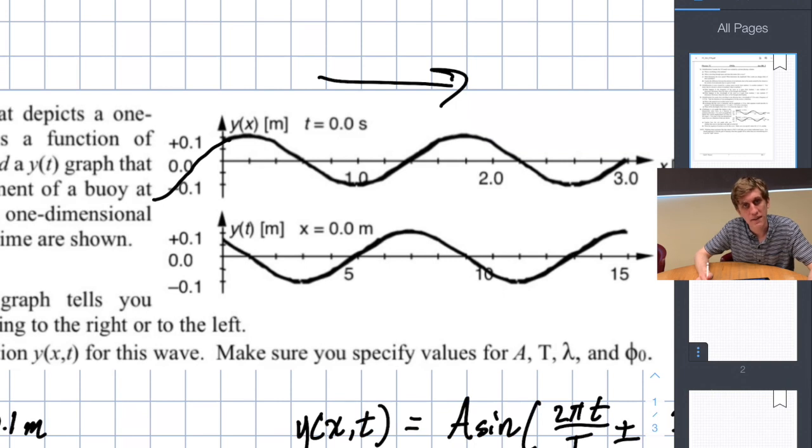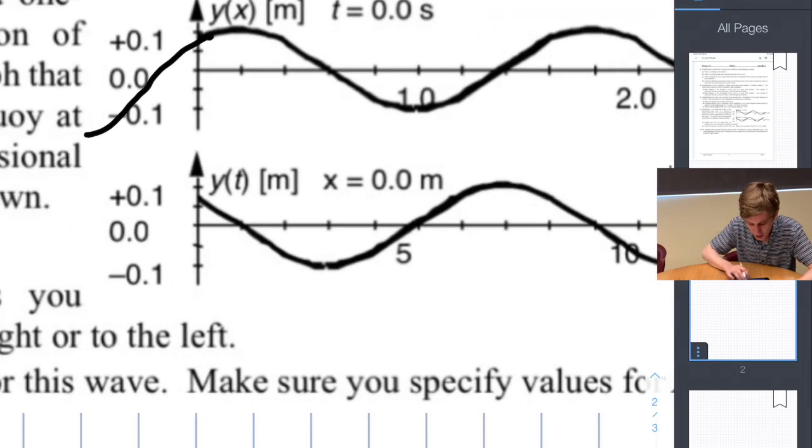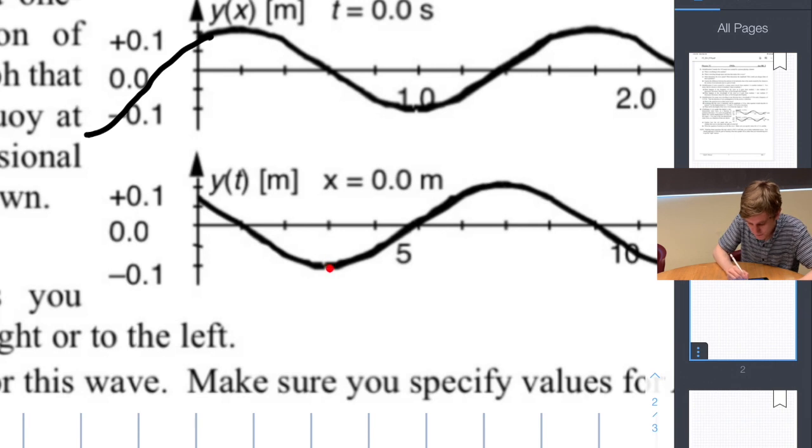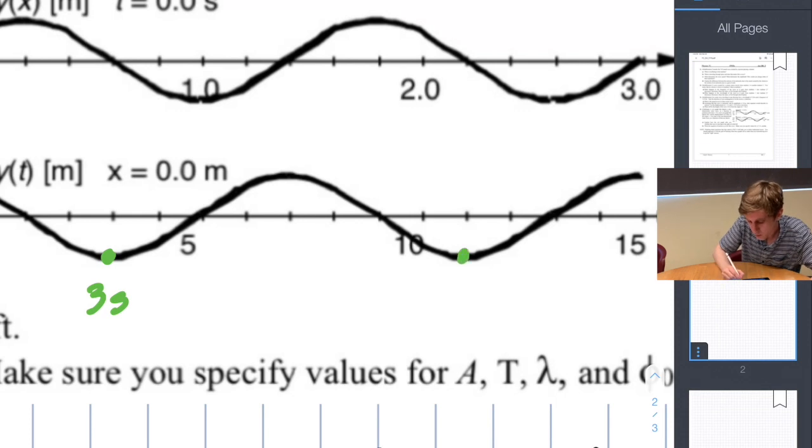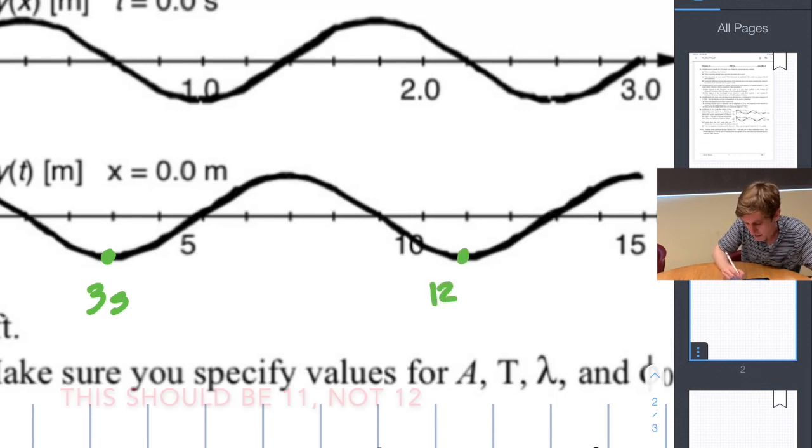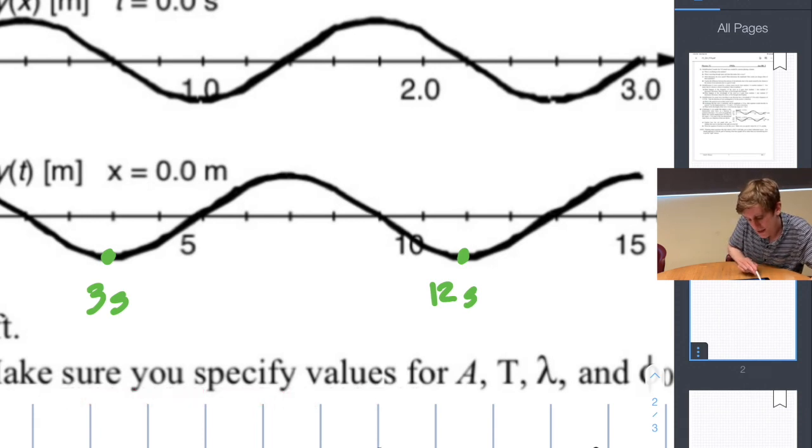So we have to look at the y of t graph in order to determine the time period of the wave. Remember this graph is showing us how the buoy is moving up and down as time passes. The time period of a wave is just the amount of time it takes to get from one crest to the next crest. If we figure out the time it takes for a full wave to pass by the buoy we've determined the time period of the wave. Let's start here in a trough. This lowest point of the wave occurs approximately three seconds after the wave starts moving. The next lowest point is over here roughly 12 seconds after the wave has started moving. The time period of the wave is just the amount of time it takes us to get from here to here. Nine seconds.